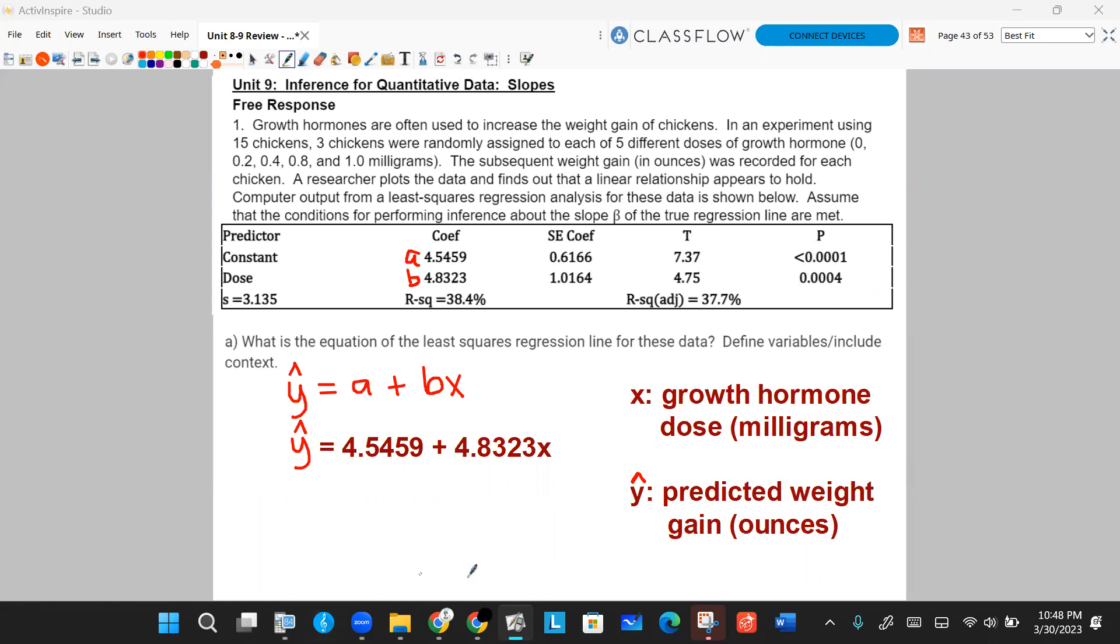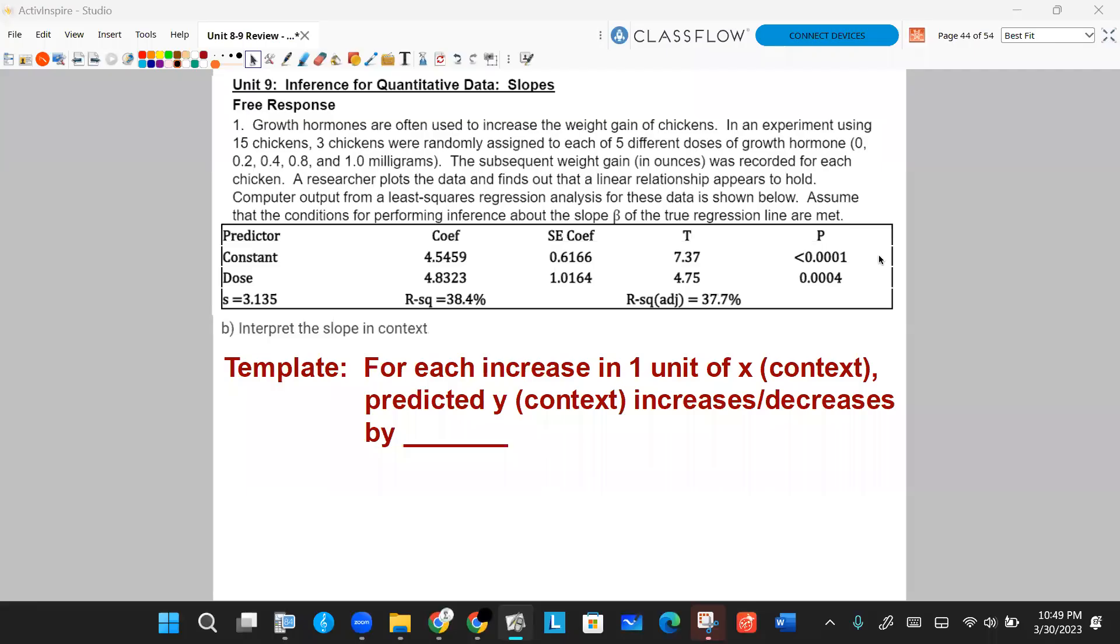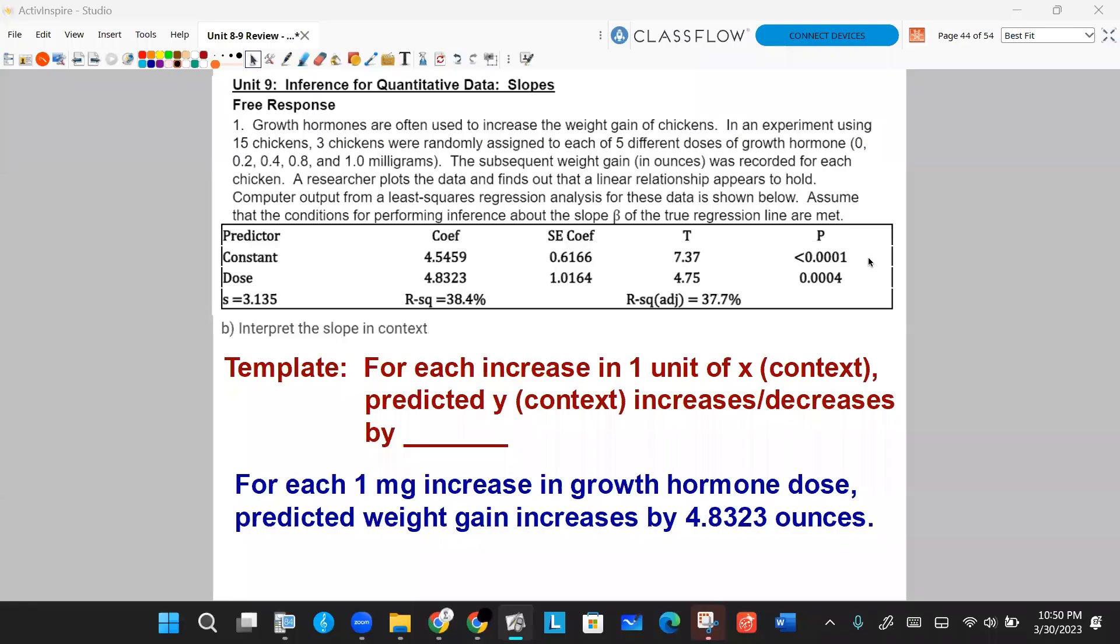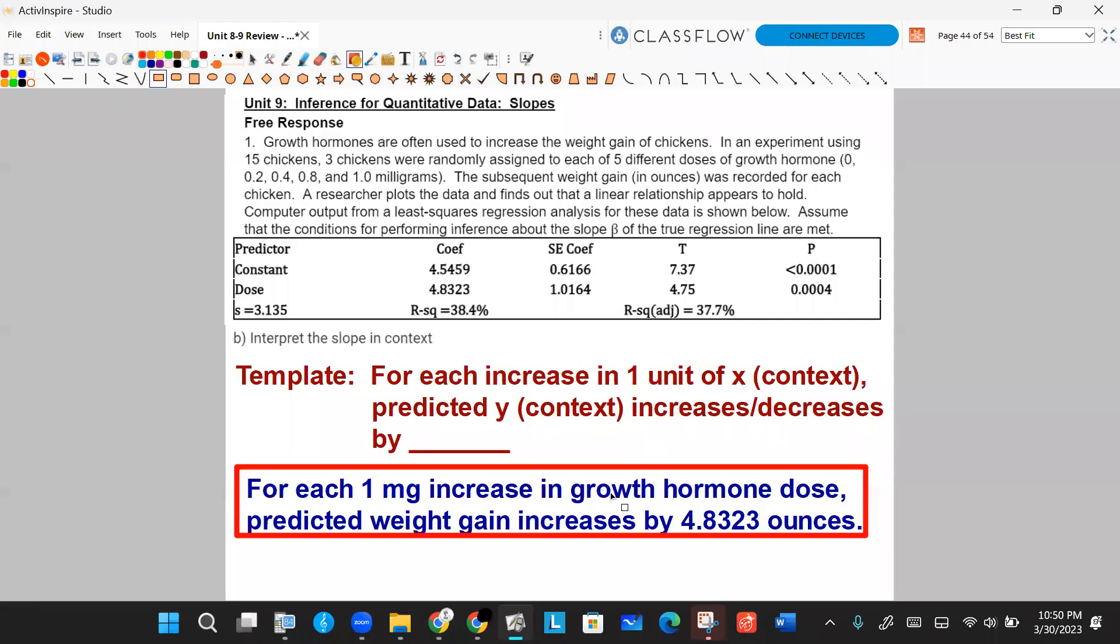Let's look at Part B. Part B is asking for you to interpret the slope in context. We have a template for interpreting slope: for each increase in one unit of X, predicted Y increases or decreases by whatever the slope value is. So we're just going to throw some context in there and put the correct unit and the number in there. And so I wrote for each one milligram increase in growth hormone dose, predicted weight gain increases by 4.83 ounces.